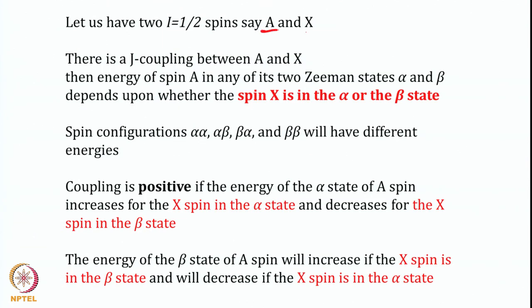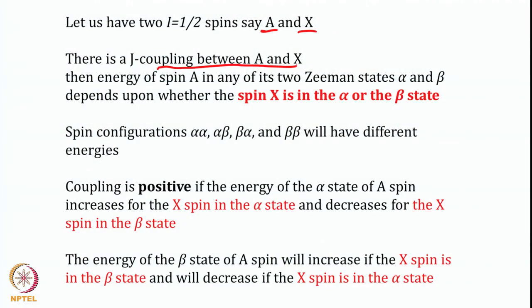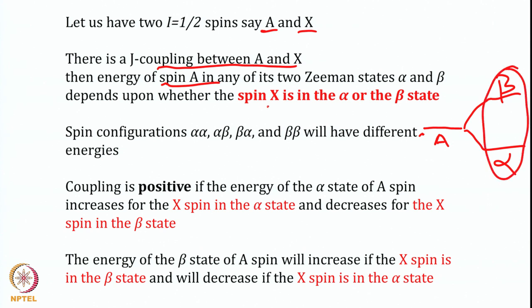Let us define two spins A and X. If these two spins are close by and connected by a bond, there is a coupling between them called J coupling. The energy of spin A has two Zeeman states: alpha state and beta state. This state depends upon whether the X spin is in the alpha state or the beta state, and that affects the resonance frequency of spin A.